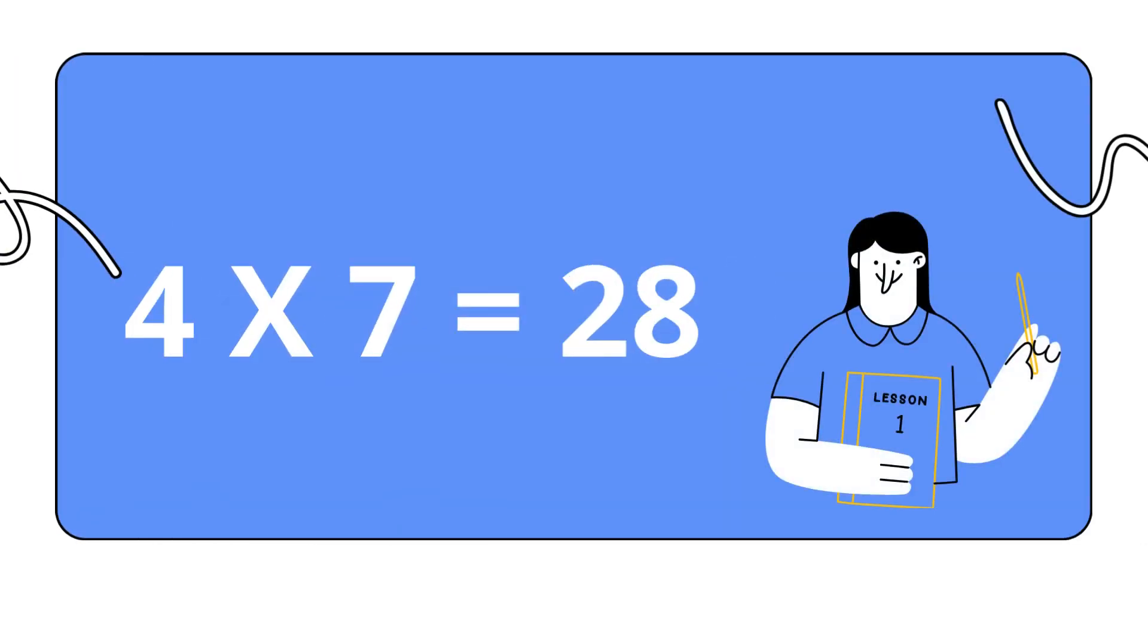Four sevens are twenty-eight. Four sevens are twenty-eight. Four eights are thirty-two. Four eights are thirty-two.